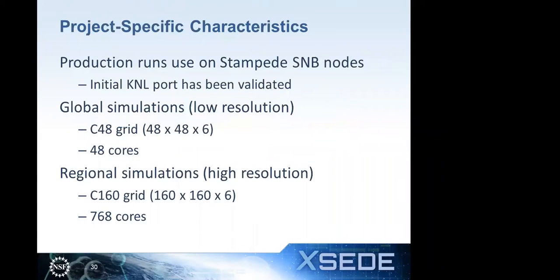Some project-specific characteristics: all runs have used Sandy Bridge nodes. The global simulations — low resolution — use a C48 grid, which is a cubic-type grid with 48 by 48 grid points on each face, solved on 48 cores. The regional simulations — high resolution — use a C160 grid with 160 by 160 grid points per face. Since this comes from a cube with six faces, those simulations use 768 cores.